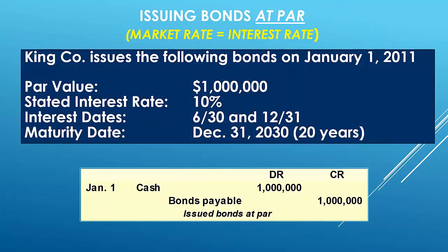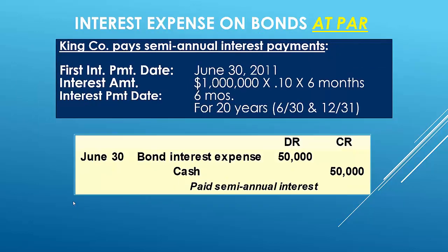For journal entries: when a bond is issued at par, you debit cash from the investor and credit a liability called bonds payable. Every six months when interest is paid, you debit bond interest expense and credit cash. For example, on a $1,000,000 bond paying 10% for six months, the semi-annual interest payment entry records that cash outflow.